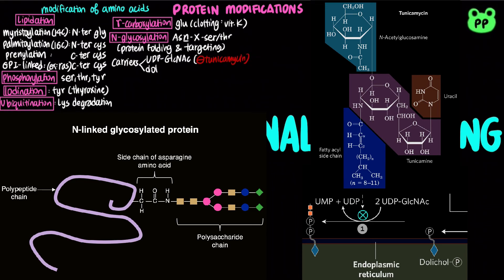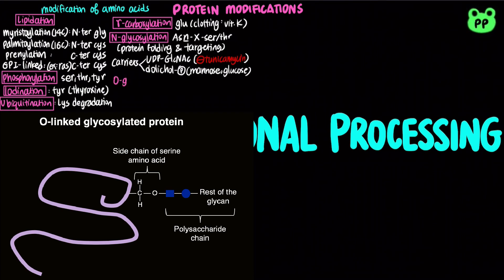N-glycosylation is also facilitated by dolichol phosphate, which is an isoprenoid that functions as a sugar carrier for mannose and glucose. O-glycosylation occurs at serine, threonine, and hydroxylysine residues, and functions in immunity, recognition, and bone flexibility.